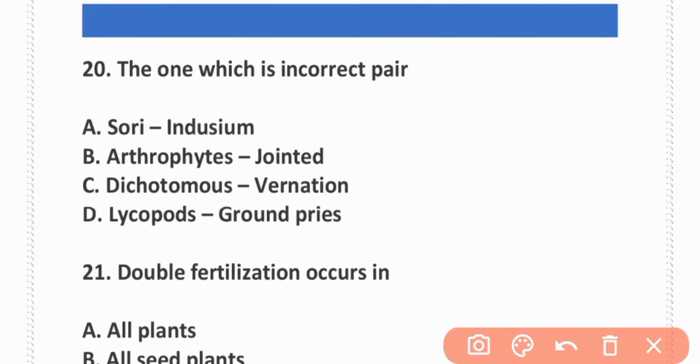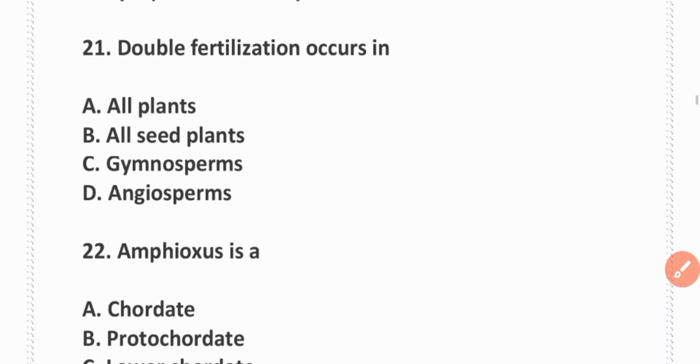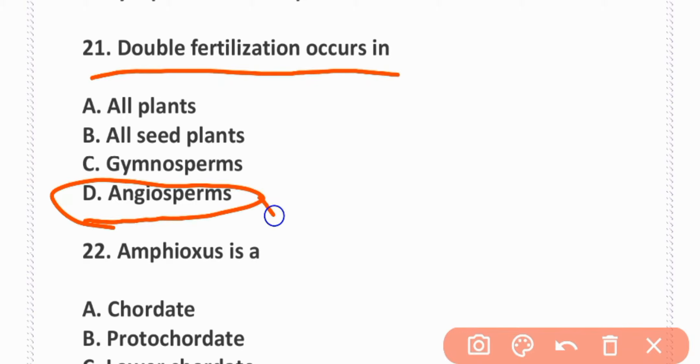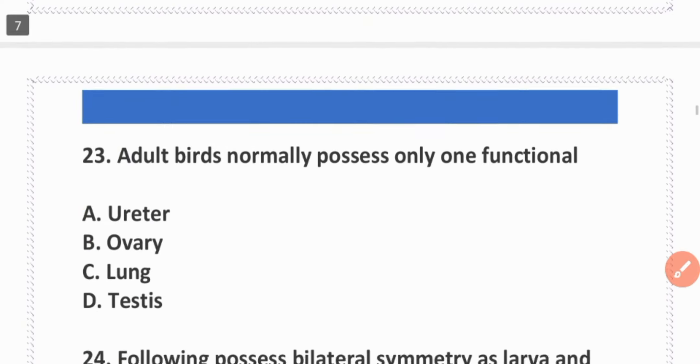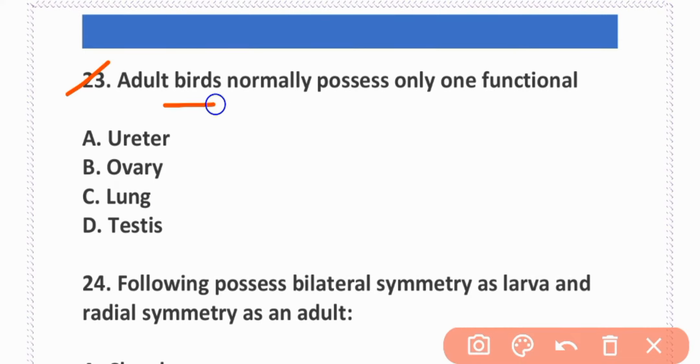The one which is incorrect: dichotomous venation. Option C. Double fertilization occurs in angiosperms. Adult birds normally possess only one functional ovary. B is correct, left ovary.